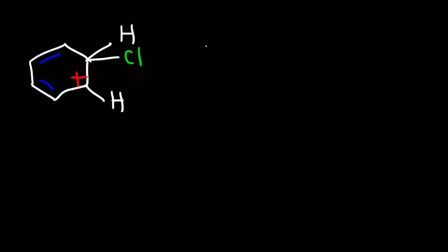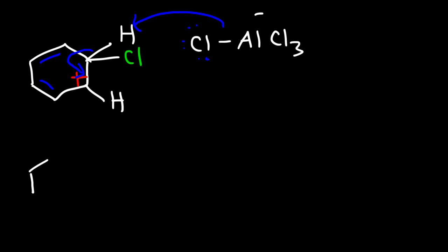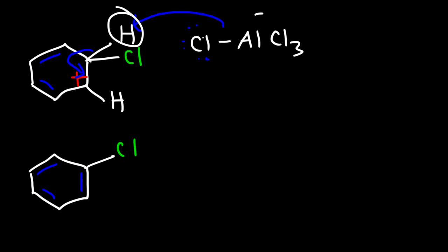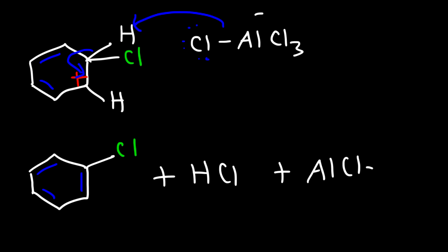In the next step, the base — which is AlCl4- — is going to grab a hydrogen, regenerating the benzene ring. So we're going to get chlorobenzene as our product, and we're also going to get HCl as a side product, and we're going to regenerate the aluminum chloride catalyst. Because AlCl3 was regenerated in the reaction and was not consumed, it is therefore a catalyst.